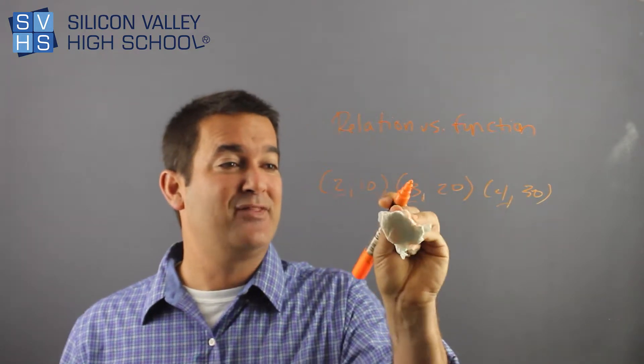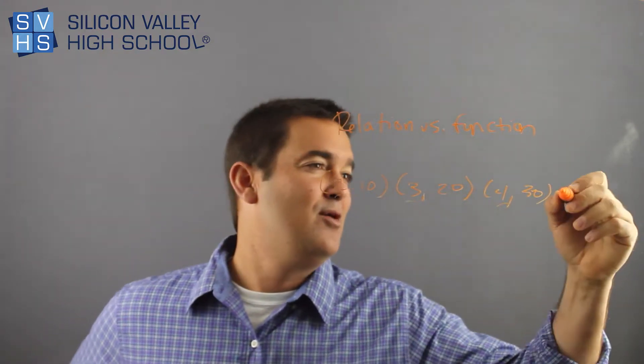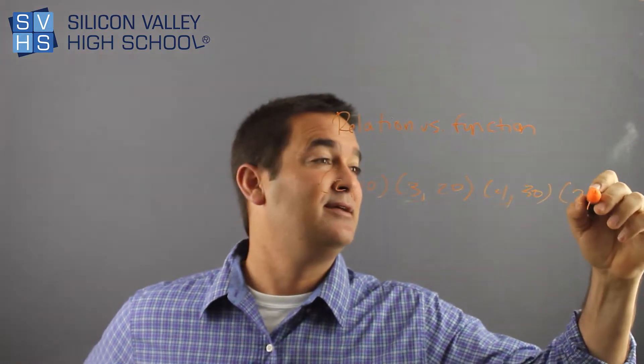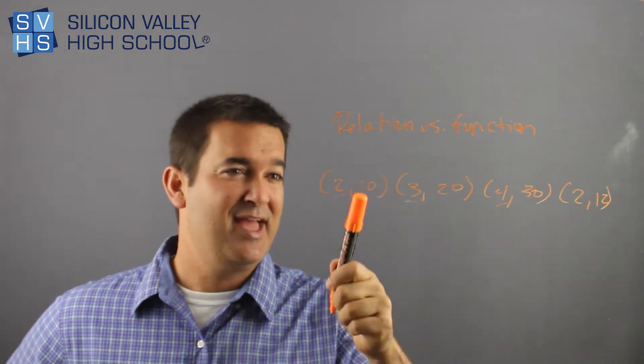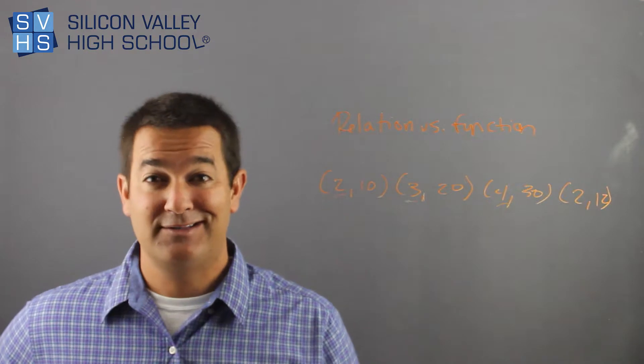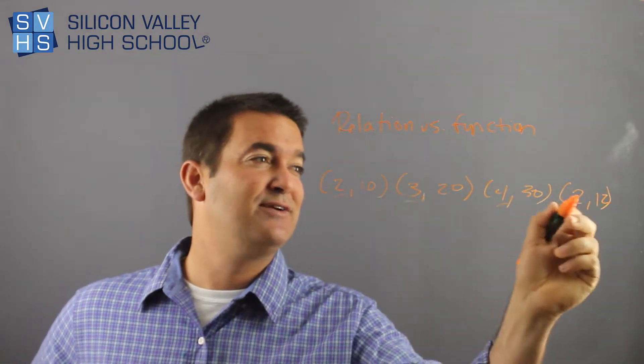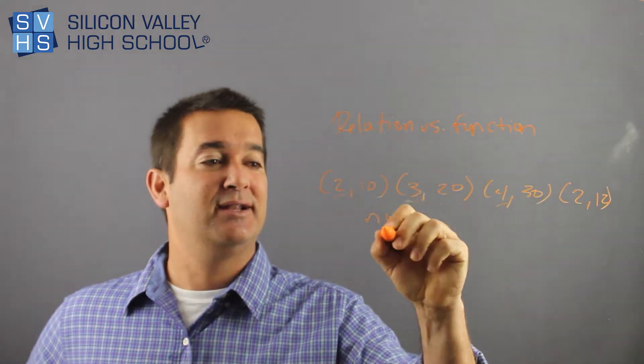Now, let me just add another point and mess this whole game up. What if the next thing I put was 2 and 12, right? Now, x did repeat and they gave me different y's. And I heard that if one input gives you two different outputs, that is not a function.